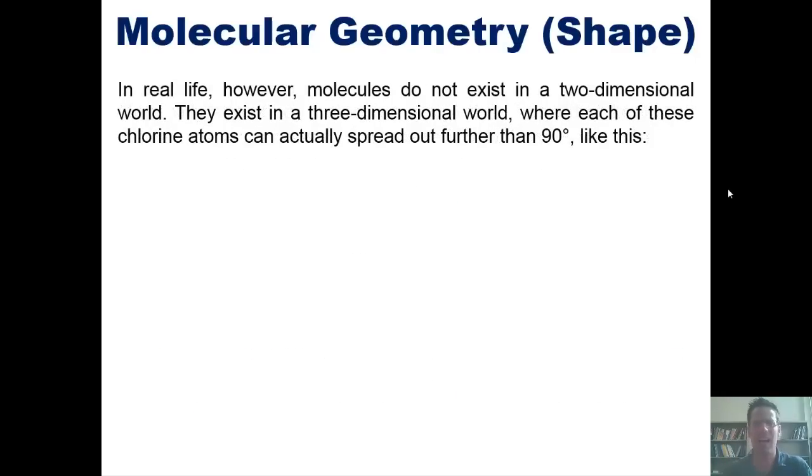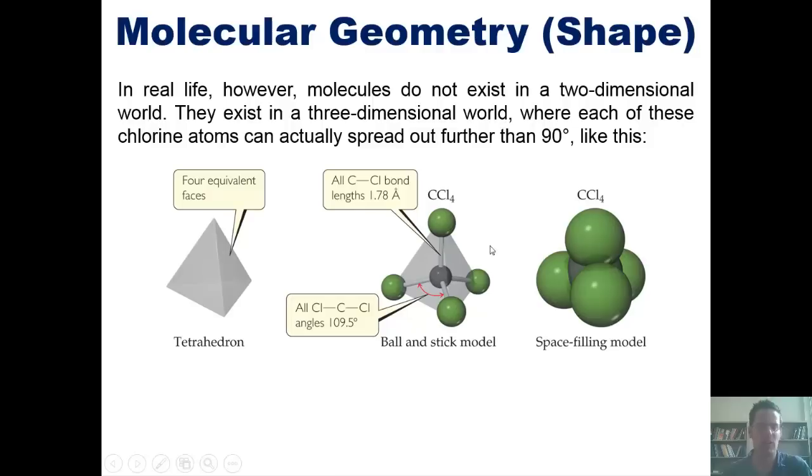However, in real life we don't live in a two-dimensional world like this flat screen you're staring at. Molecules exist in a three-dimensional world where each of these four chlorine atoms can actually spread out a little bit further than 90 degrees. This might be difficult to see, but three-dimensionally speaking, carbon tetrachloride has its central carbon atom like this, and each of these chlorines is poking out a little bit further than 90 degrees because it's not flat. They're poking out three-dimensionally as this model attempts to depict. The angle between each of these groups is 109.5 degrees.